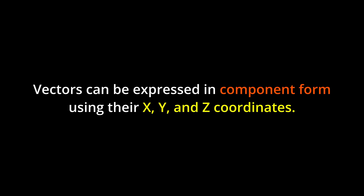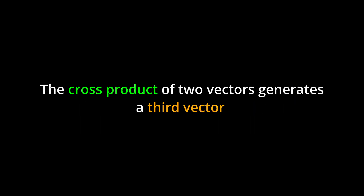Vectors can be expressed in component form using their x, y, and z coordinates. The cross product of two vectors generates a third vector orthogonal to the first two.